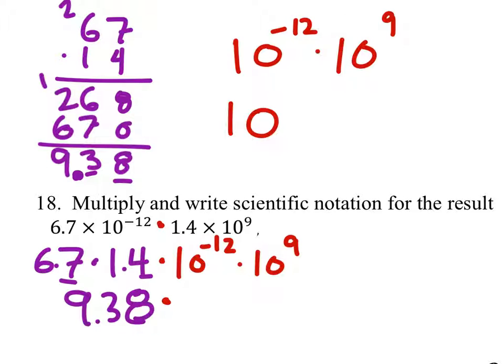So the exponents, since we're multiplying the same bases, we will add the exponents. And that would give us 10 to the power of negative 3.